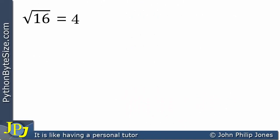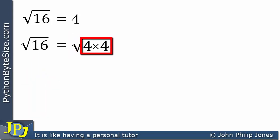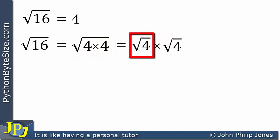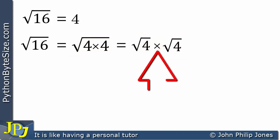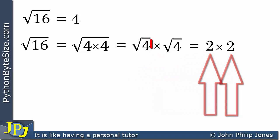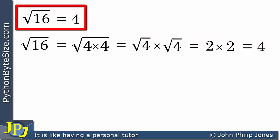Now something we're going to find useful when manipulating complex numbers can be shown as follows. The square root of 16 is equal to 4, but you can take this square root of 16 and rewrite it as the square root of 4 times 4. Now obviously 4 times 4 is 16. We can then write this as the square root of 4 times the square root of 4 separately, multiplied together. The square root of 4 is 2, so this equals 2 times 2, which is 4 — confirming that the square root of 16 is 4.